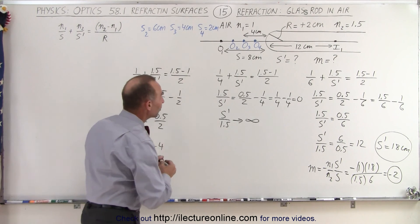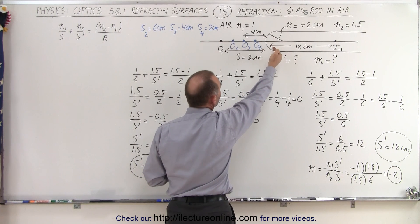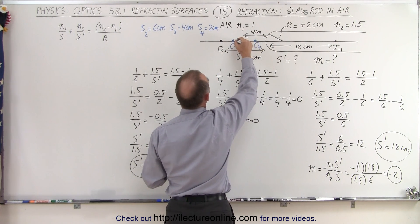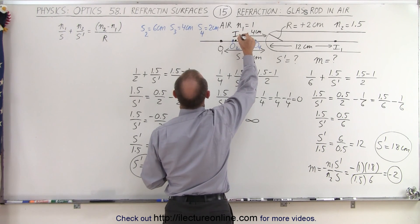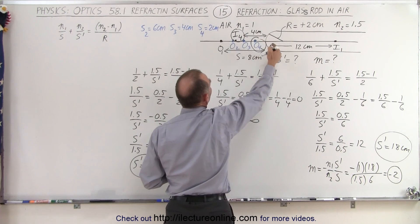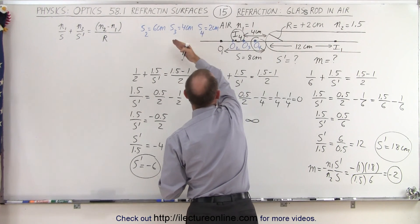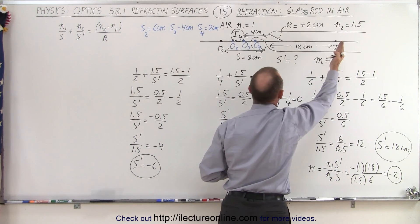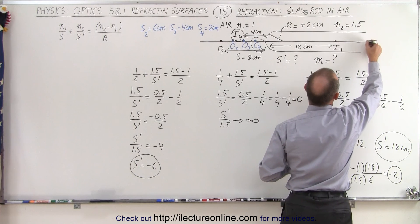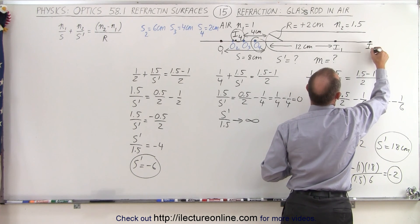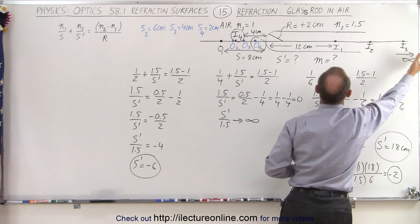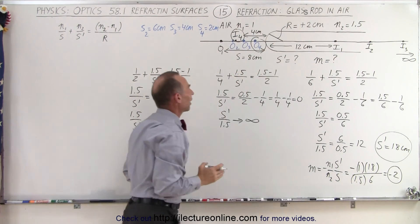Notice when we move the object even closer to the right, closer to the boundary, now we have an image on this side, so now we end up with an image over here. This here is image number 4 associated with object number 4. And so instead of having an image on the other side of the boundary, we now have an image on the same side. Remember that I2 was at 18 centimeters, I3 approached infinity, and then I4 starts over here on this side.